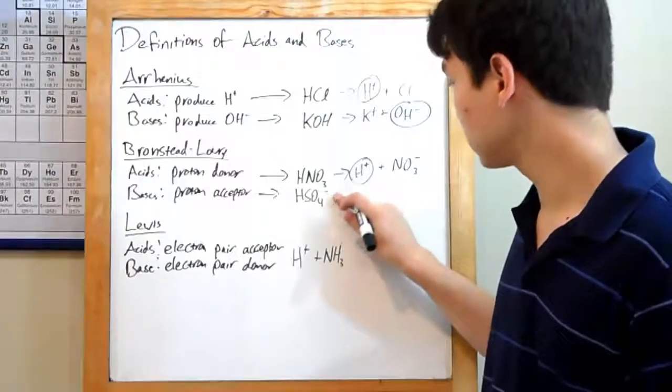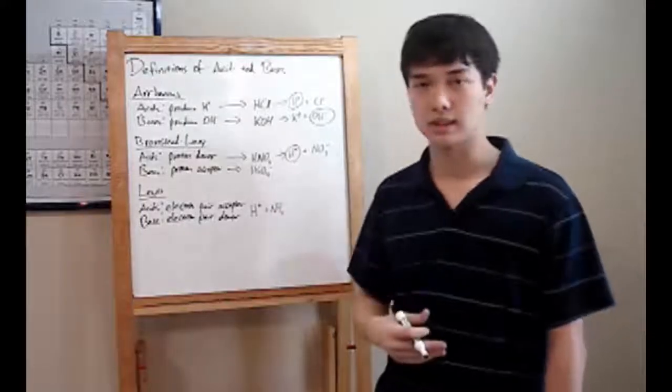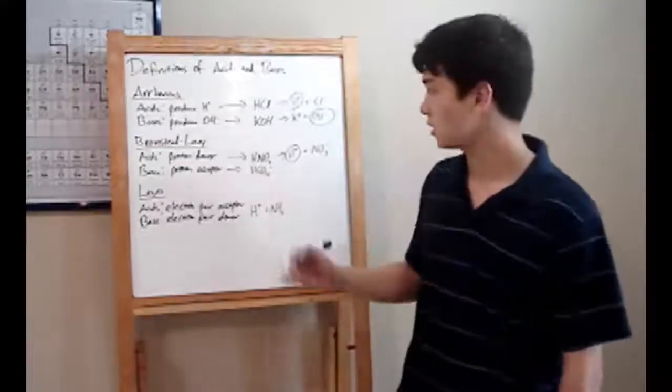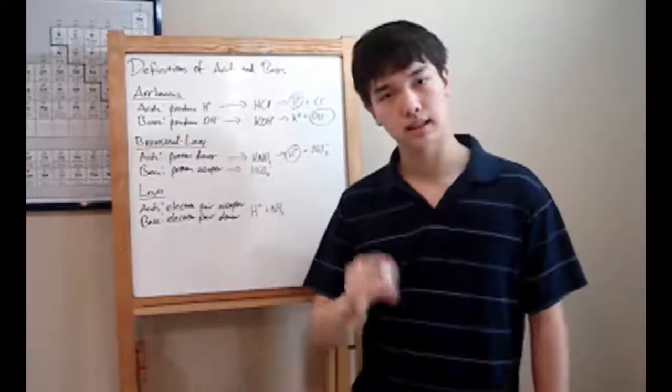HSO4 minus is considered a base by the Bronsted-Lowry definition, but not by the Arrhenius definition. That's because, although it doesn't produce OH minus ions, it will accept a proton.